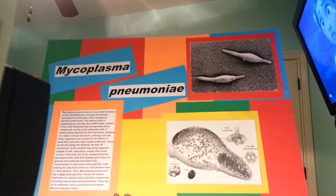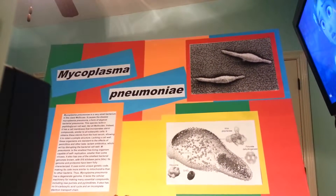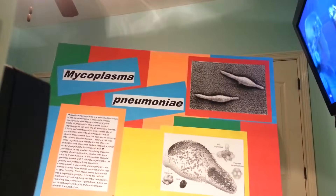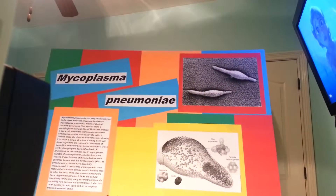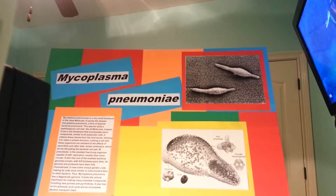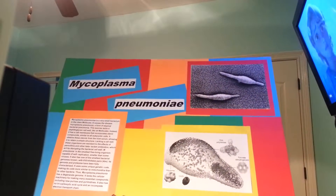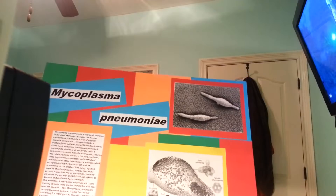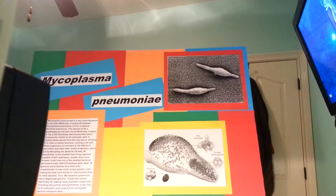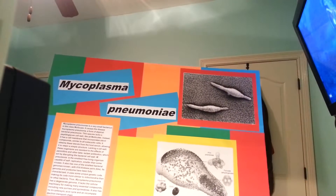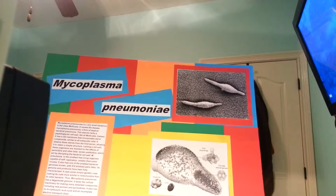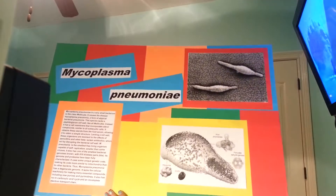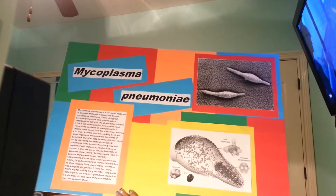Mycoplasma pneumoniae is the smallest free-living organism capable of self-replication, smaller than some viruses. It also has one of the smallest bacterial genomes known, with 816 kilobase pairs. Its genome and proteome have been fully characterized. It uses some unique genetic code, making its code more similar to mitochondria than to other bacteria. Thus, Mycoplasma pneumoniae has a degenerate genome. It lacks the cellular machinery for making many essential compounds, including purines and pyrimidines. It also has no tricarboxylic acid cycle and an incomplete electron transport chain.